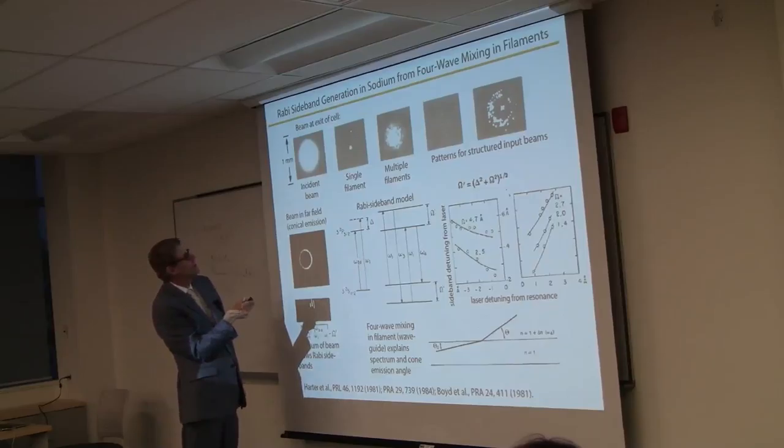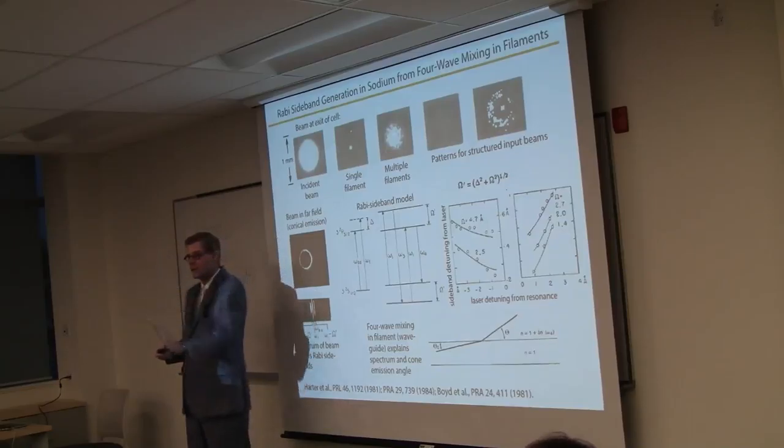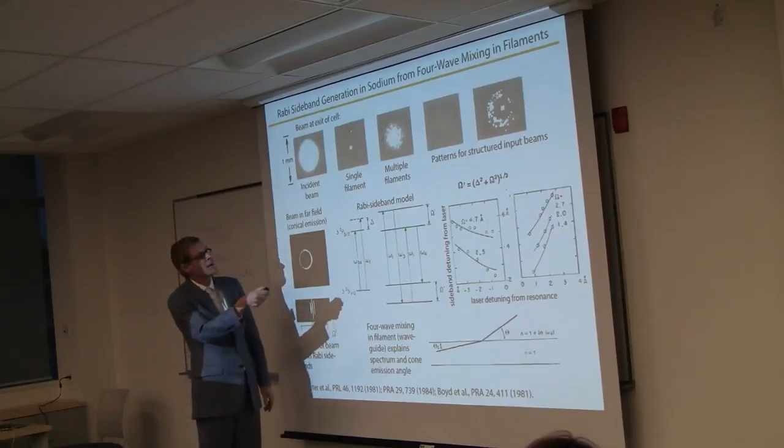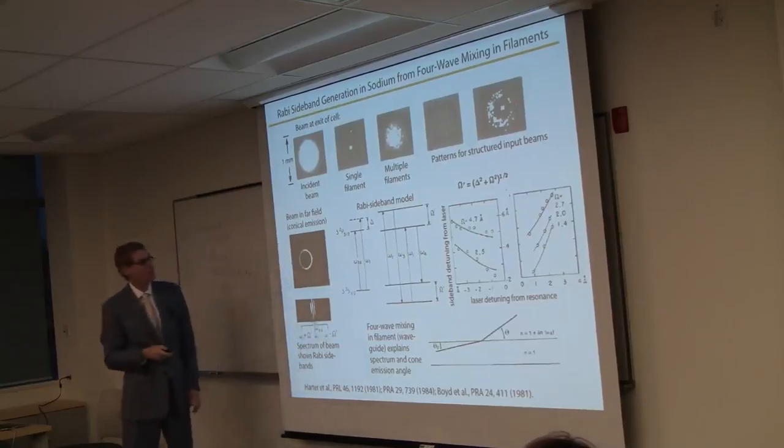It can collapse into a single filament, multiple filaments. This would be what I would call small-scale filamentation. If the light goes through a tilted glass plate, you put a deterministic structure on the beam, and it's no longer a random-looking pattern. You can determine the structure that will show up on your laser beam.